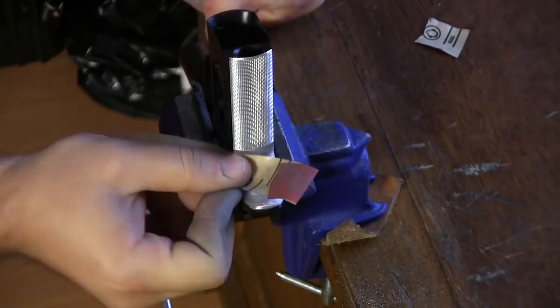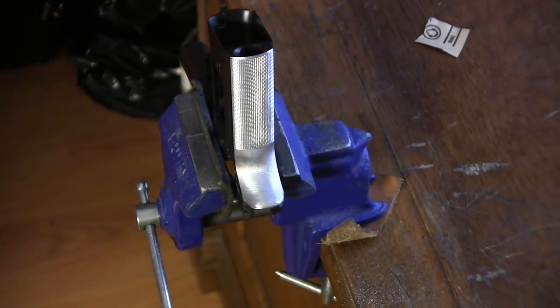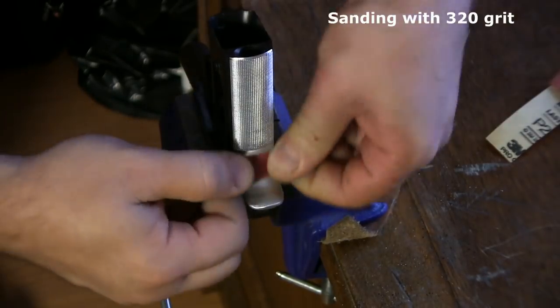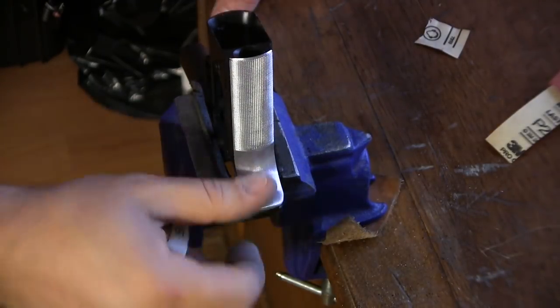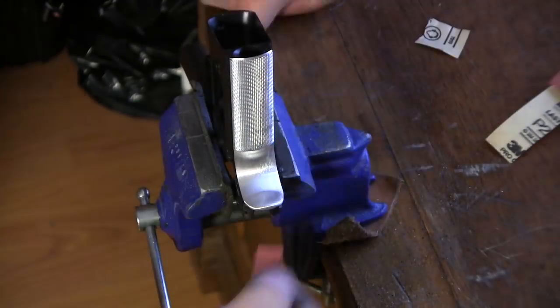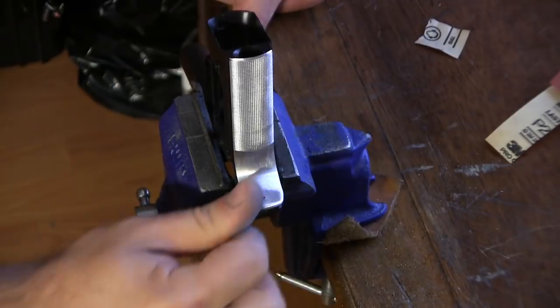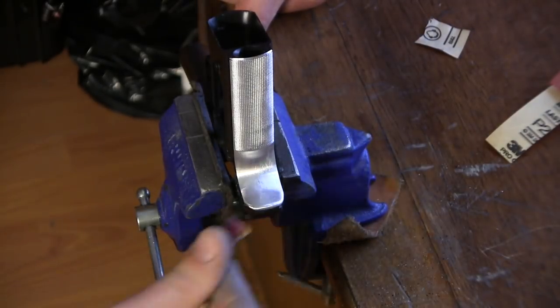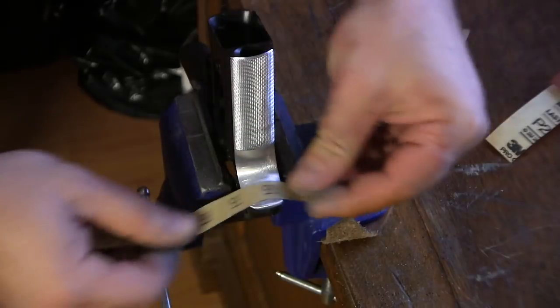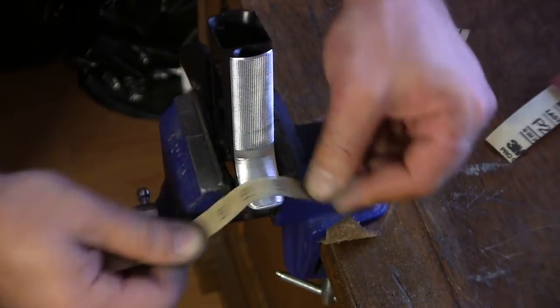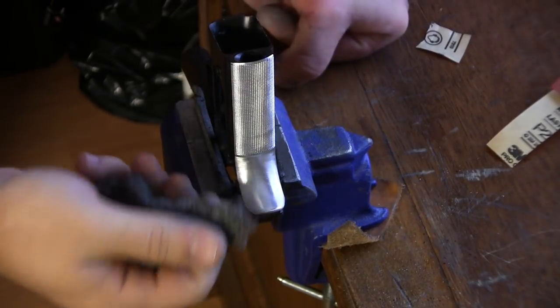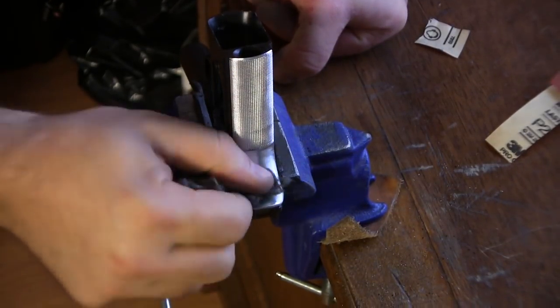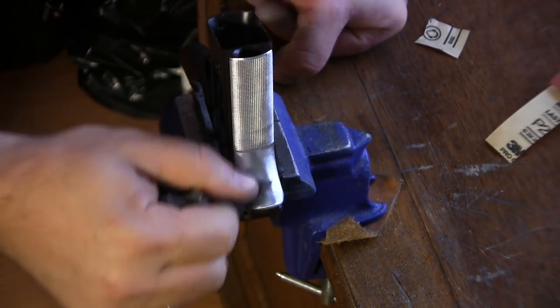This is 320 grit now, so you'll see that the sanding results in finer scratch marks. And at this point the shaping process is done, so I'm just cleaning up. And now I'll just use a little bit of steel wool, just to clean up.